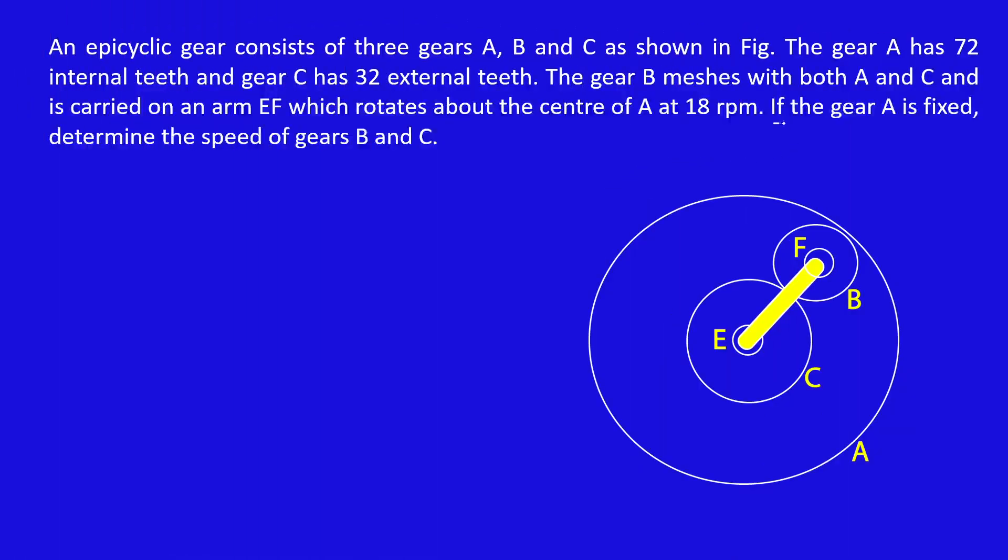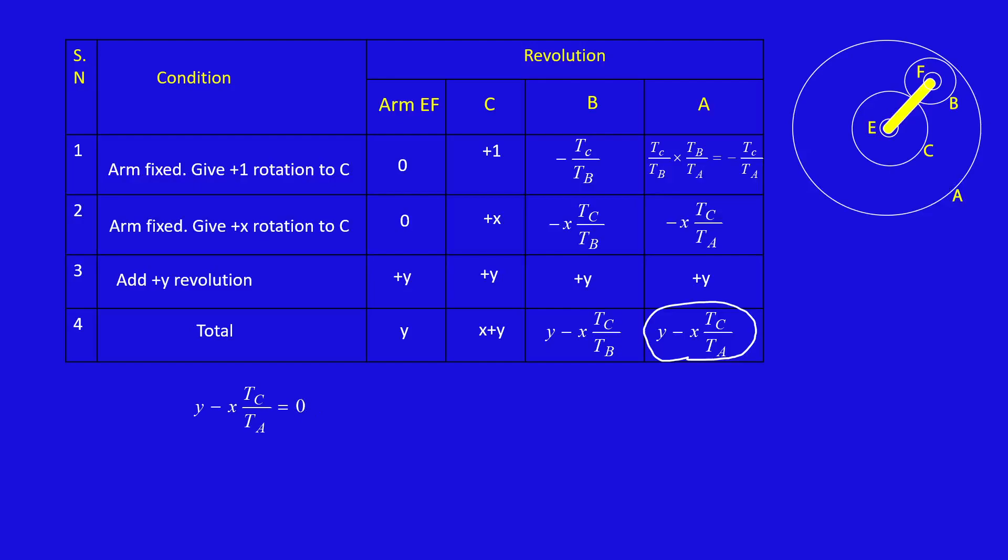Problem statement: if gear A is fixed, which means NA equal to 0, we need to find out speed of gear B and C. Here Y equal to 18 RPM. Y minus X TC by TA equal to 0. Again Y equal to 18, TC 32, TA 72. From that you will get X equal to 40.5.